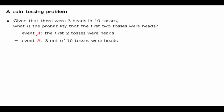The conditional probability of event A — namely that the first two tosses were heads — given that another event B has occurred, namely that we had exactly 3 heads out of the 10 tosses. Before we can start working towards the solution to this problem, we need to specify a probability model that we will be working with.